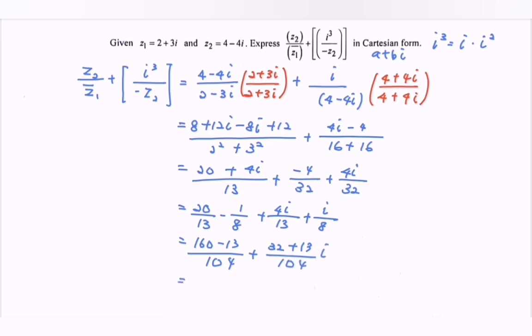So finally, z₂ over conjugate of z₁ plus i³ over negative z₂ will be equal to 147 over 104 plus 45 over 104i.